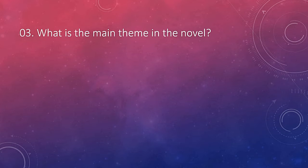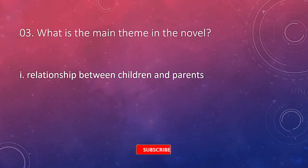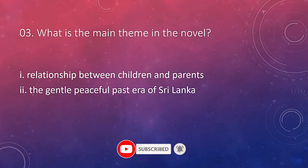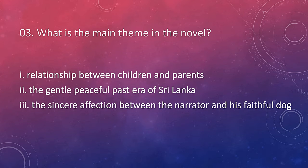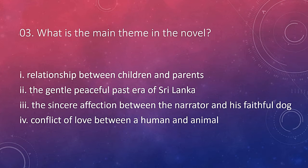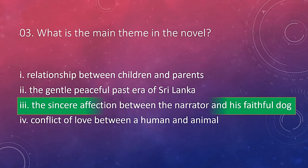Question number three: what is the main theme in the novel? The options include the relationship between children and parents, the gentle and peaceful past era of Sri Lanka, and the sincere affection between the narrator and his faithful dog, and the conflict of love between human and animal. All these are themes of the novel, but it is majorly about the mutual and sincere affection between the dog and the narrator. So the answer is the sincere affection between the narrator and his faithful dog.